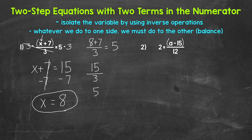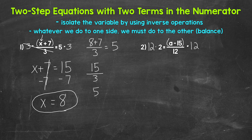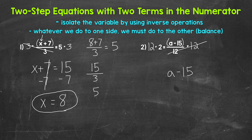We need to undo the division first — get rid of the fraction. The inverse of division is multiplication, so let's multiply both sides by 12. On the right side, dividing by 12 and multiplying by 12 cancels out, leaving a minus 15. On the left side, 12 times 2 gives us 24. So a minus 15 equals 24.